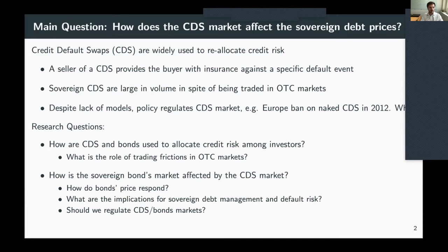The research questions we are trying to address are: first, how are CDS and bonds used to allocate credit risk across different types of investors, and in particular, what is the role of trading frictions in over-the-counter markets during this reallocation? Second, we try to understand the implications of having a CDS market for sovereign bond prices — how bond prices respond to the existence of this alternative asset providing insurance against default risk, and the implications for sovereign debt management.